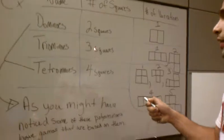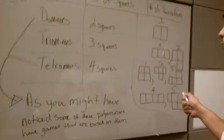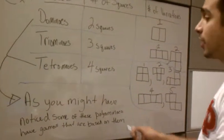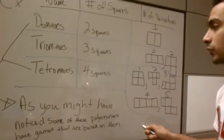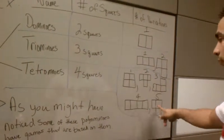With triominoes, we have three squares and there's only two variations. And with tetrominoes, we have four squares and four different variations.